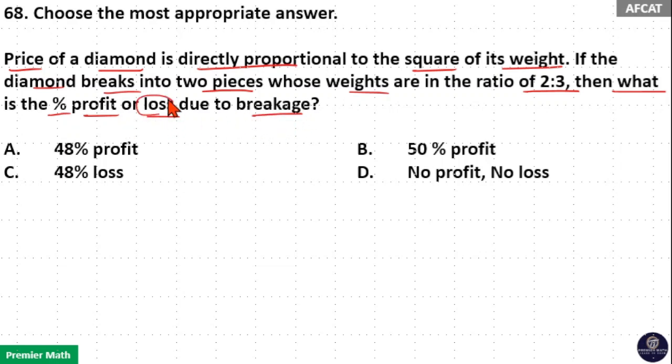When there is a breakage, there must be a loss. So here, price is directly proportional to the square of its weight. Then, after the breaking of this diamond, new price will also be directly proportional to the square of the new weight.